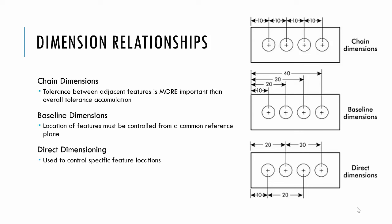Baselines: the location of the features is controlled from a common reference point. You see that they all start from the far left-hand side of that piece. The bottom is the same piece again, but it's direct dimensioning, used to control specific feature locations. You'll see some start from each other, some start from the baseline. That's called direct dimensioning. So we have chain, baseline, and direct, and you'll need to be able to identify those different types.